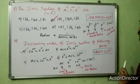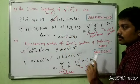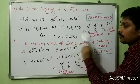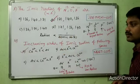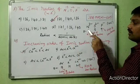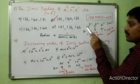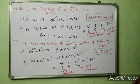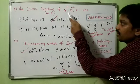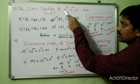In isoelectronic species, ionic radius is inversely proportional to atomic number. If atomic number increases, radius decreases. Nitrogen has the lowest atomic number (7) among these three species, so it has the highest radius. N³⁻ has the highest radius of 1.71 Å.